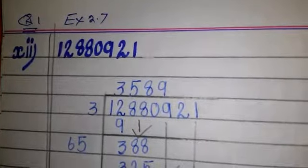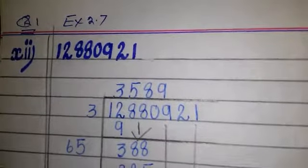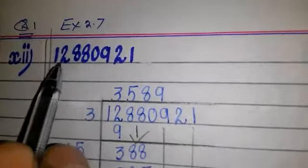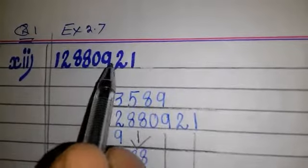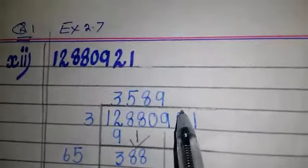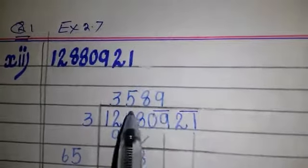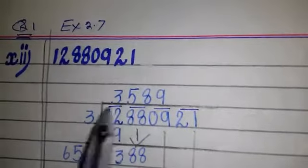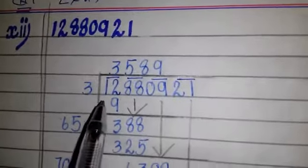So we write 12880921 here and make the pairs - 1, 2, 3. We got 4 pairs. The first pair is 12.